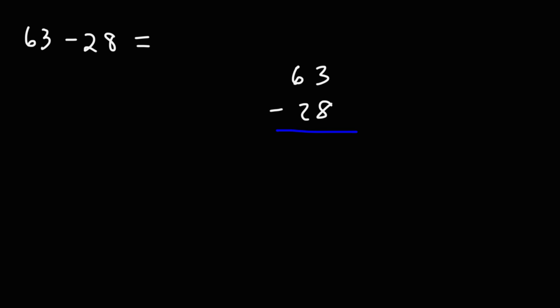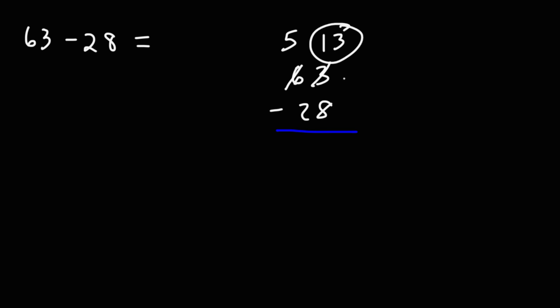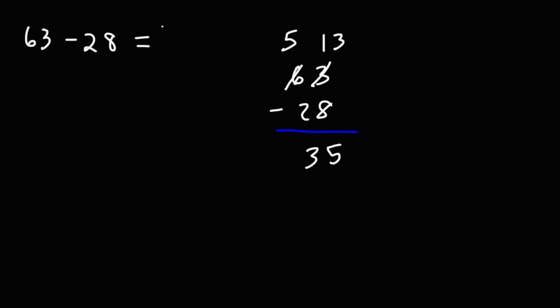What we need to do is borrow a 1 from the next column. We're going to borrow a 1 from 6. 6 minus 1 is 5, and now the 3 is going to become 13, because we borrowed a 1 and pushed it next to the 3, making it 13. So now we have 13 minus 8, which is 5, and then 5 minus 2, which is 3. So the answer is 35. You can confirm that with a calculator: 63 minus 28 is 35.